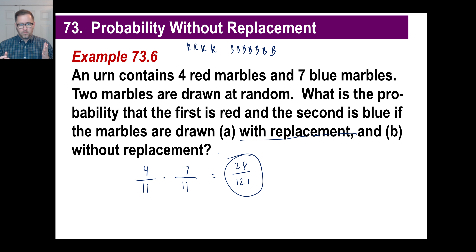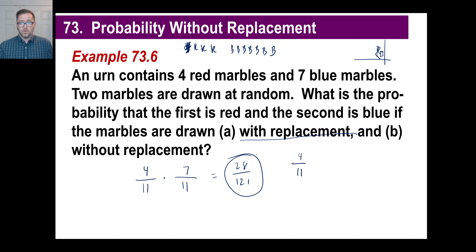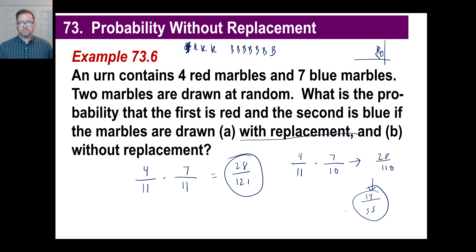Now part B: without replacement. The first probability doesn't change — red is still 4 out of 11. But since we drew the red marble and it's gone, we now have 7 blue marbles out of 10 total remaining. Multiply 4/11 by 7/10 to get 28 out of 110. Reduce by 2: that's 14 out of 55. That's the difference — with replacement gives 28/121, without replacement gives 14/55.